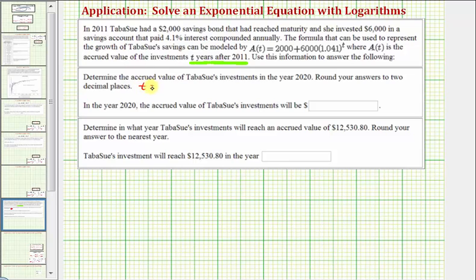Well, we know T equals zero represents the year 2011. And since 2020 is nine years after 2011, T equals nine represents the year 2020.